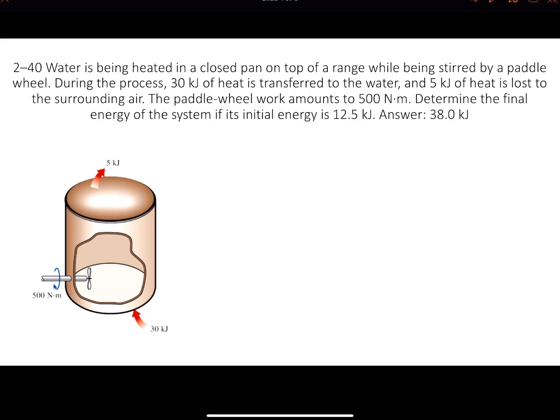We're going to be solving problem 2-40 in the Cengel book. Water is being heated in a closed pan on top of a range while being stirred by a paddle wheel. During the process, 30 kilojoules of heat is transferred to the water and 5 kilojoules of heat is lost to the surrounding air. The paddle wheel work amounts to 500 newton meters. We need to calculate the final energy of the system if the initial energy is 12.5 kilojoules and the answer is 38 kilojoules. What is really important is that we analyze what we have, and every time we'll come with the same equation.